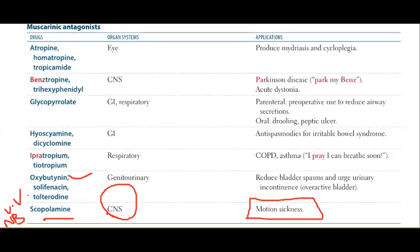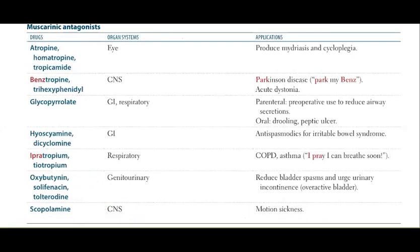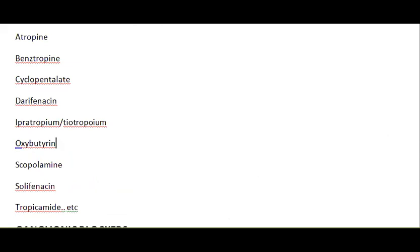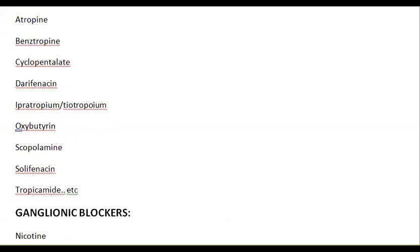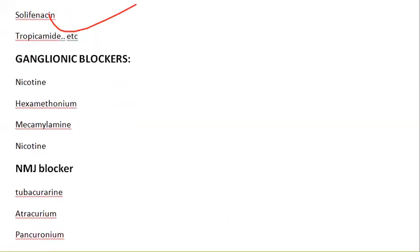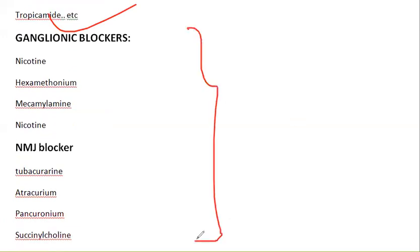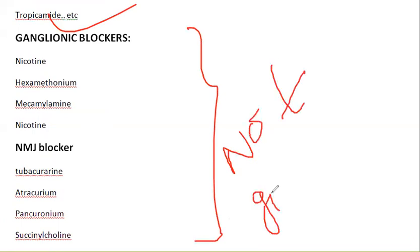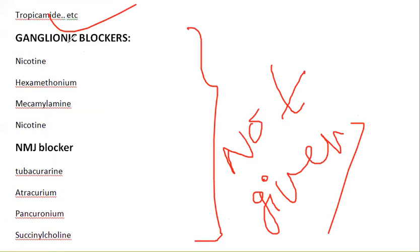This completes the muscarinic antagonists. The anti-muscarinic agents have been covered; ganglionic blockers and NMJ blockers — the anti-nicotinic agents — are not in the First Aid book but are important for exams and will be covered tomorrow, along with a CDF summary sheet.